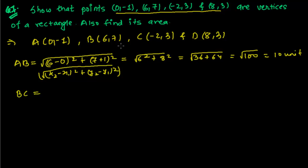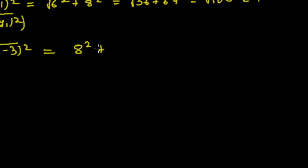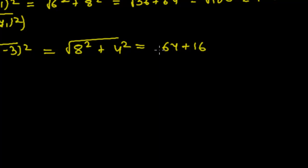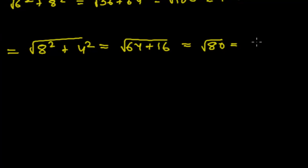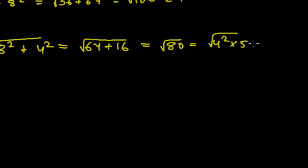BC: difference of x-coordinates = (6 - (-2)) = 8, squared, plus difference of y-coordinates = (7 - 3) = 4, squared — under root. So √(8² + 4²) = √(64 + 16) = √80 = √(16 × 5) = 4√5 units. We got BC = 4√5 units.